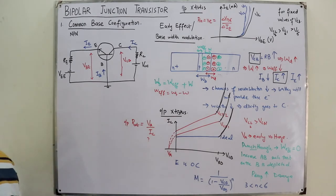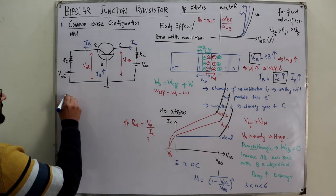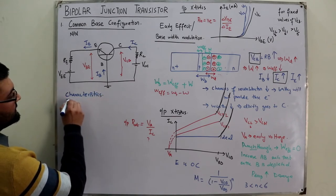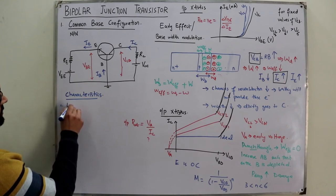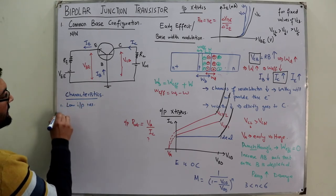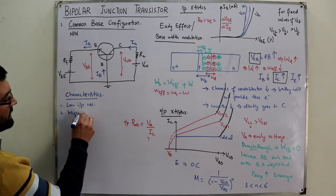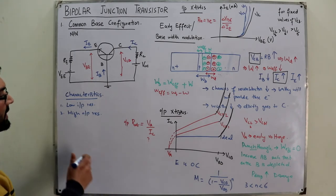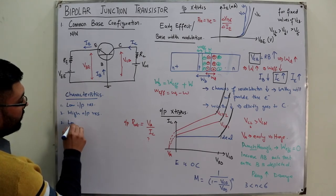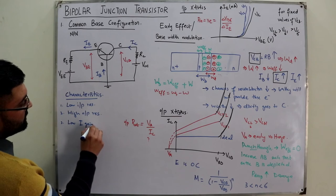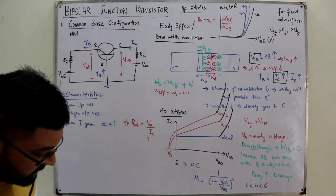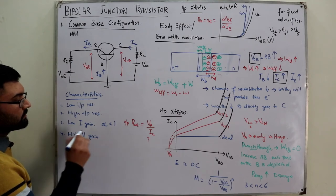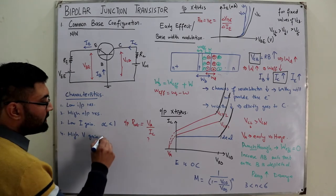The characteristics of the common base configuration are: first, low input resistance; second, high output resistance; third, low current gain — seen from the value of alpha, which is less than 1; fourth, high voltage gain. This means the circuit can be used as a voltage amplifier.